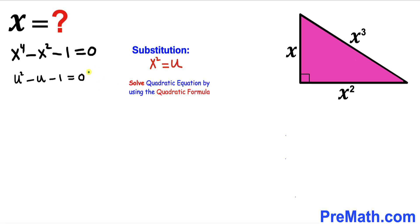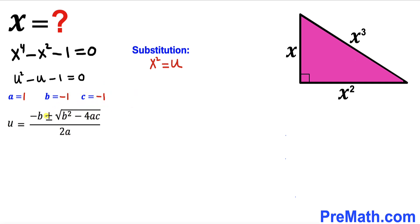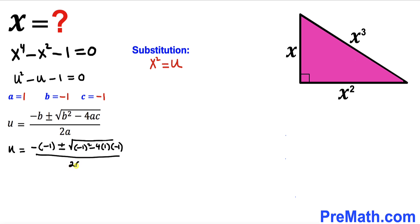We now have a quadratic equation and we are going to solve it using the quadratic formula. Our coefficients are a equals 1, b equals negative 1, and constant c equals negative 1 as well. Filling in the quadratic formula, u equals negative 1 plus or minus the square root of (negative 1) squared minus 4 times 1 times (negative 1), all over 2 times 1.